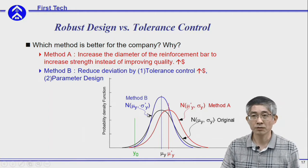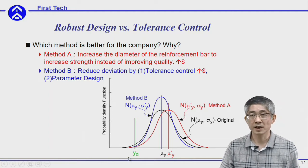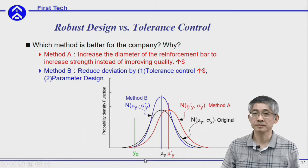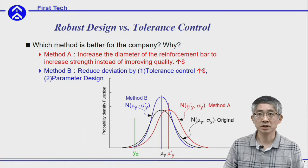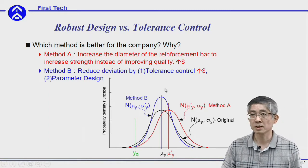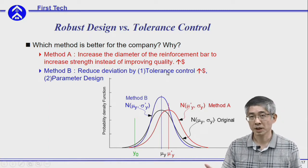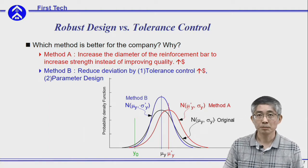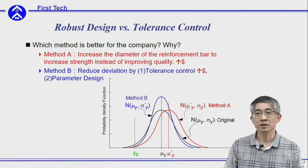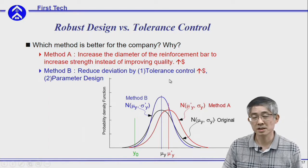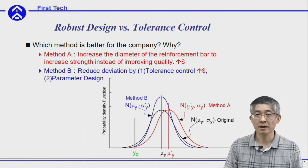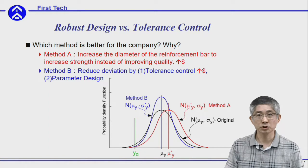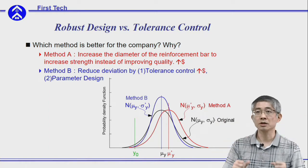To reduce the standard deviation there are two approaches. The first is using tolerance control — better machines, better materials, better technicians — however, again, cost will increase. The second possible method is using parameter design: finding the optimum parameters such that the distribution spread can be reduced.